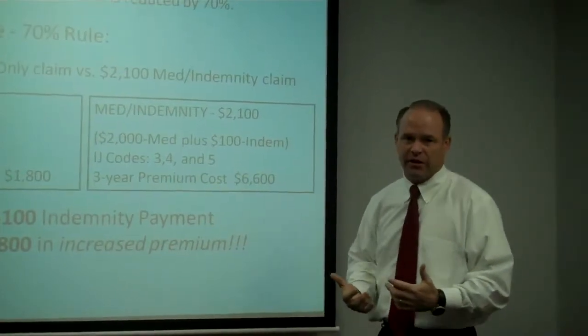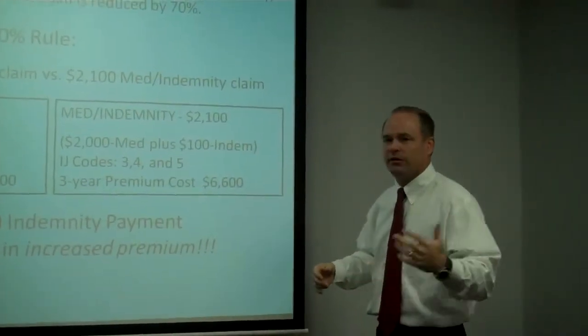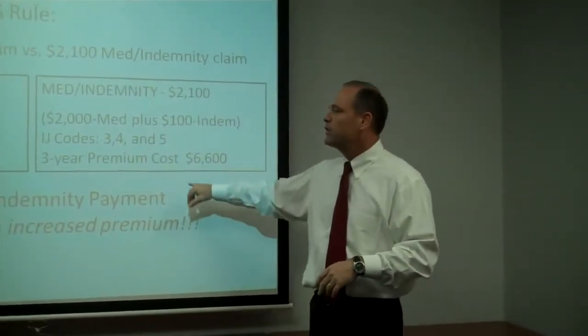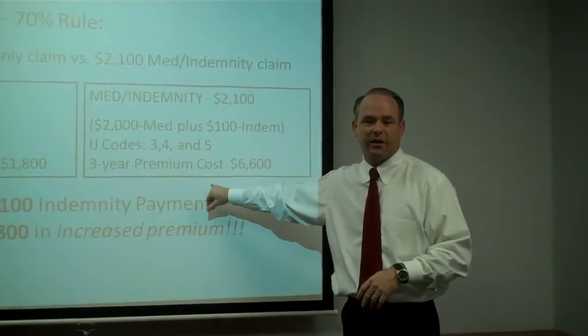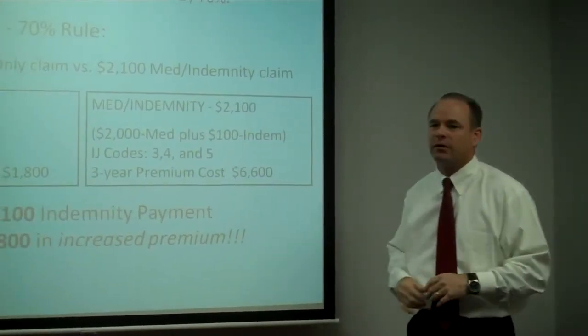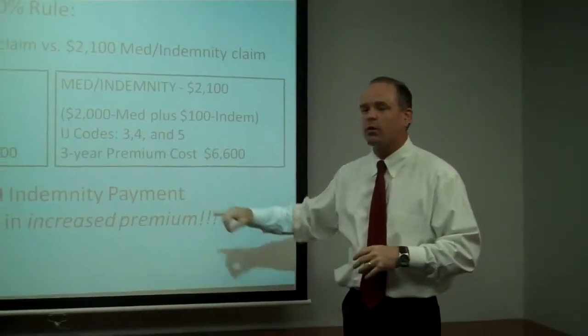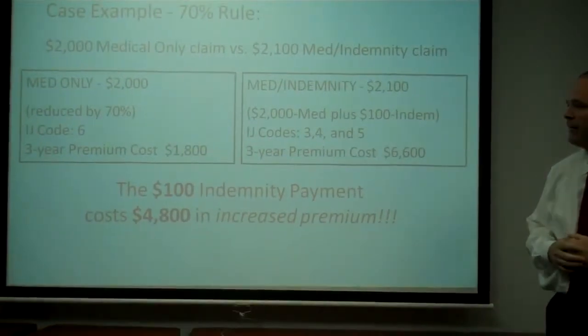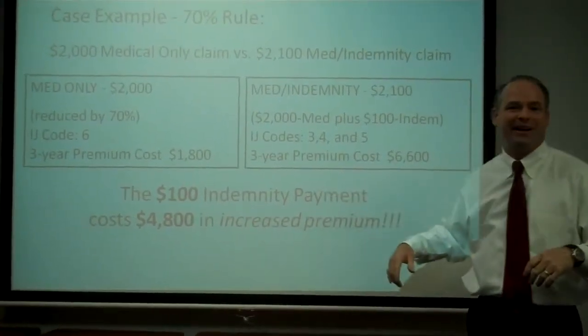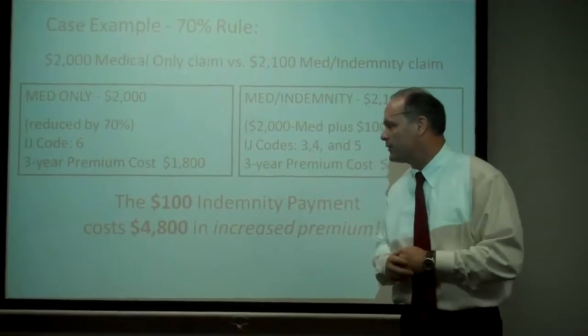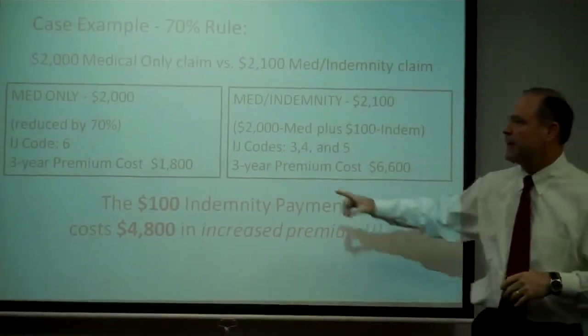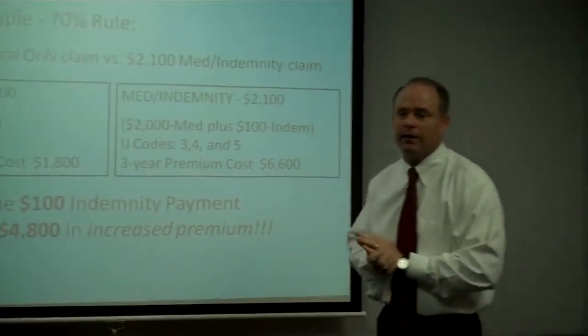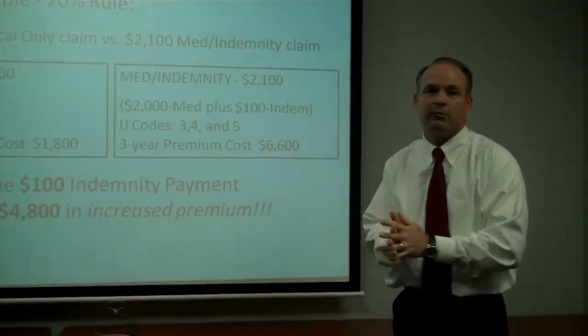Now we lose the medical-only status. It has coded something other than IJ6, probably IJ5 or IJ4, which includes indemnity, which is the lost wages in this particular case. And the three-year premium cost now, because of that $100 in lost wages, jumps to $6,600 for a difference of $4,800. These numbers are staggering. That $100, if you believe in a penny saved is a penny earned, the $100 that you paid in payroll to keep that claim medical-only turned into $4,800 in savings over the three years.